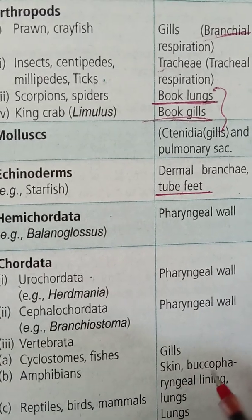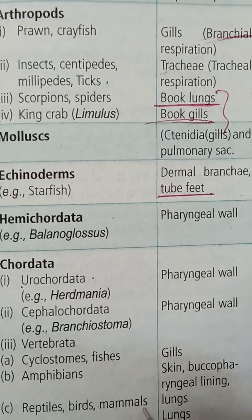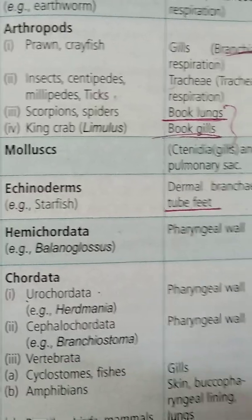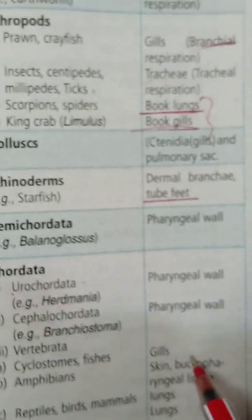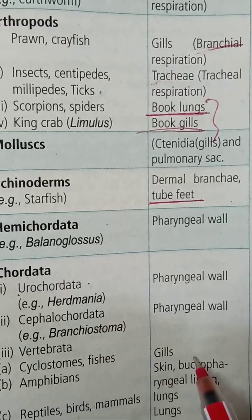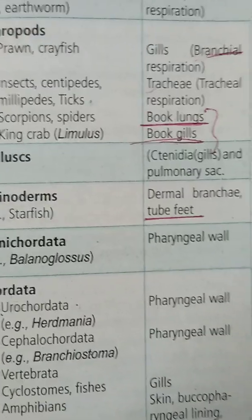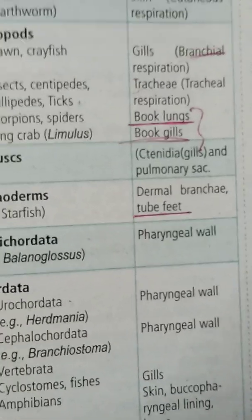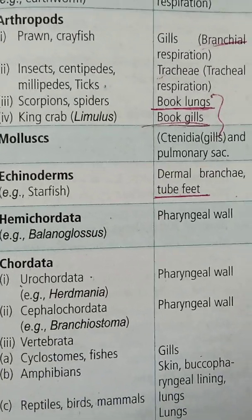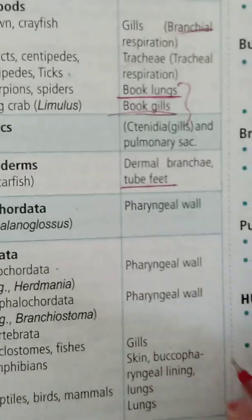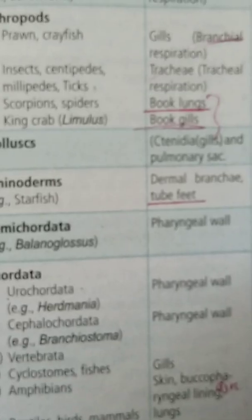In Vertebrates: Cyclostomes and Fishes — gills are involved. In Amphibians — skin and buccopharyngeal lining are involved. In Reptiles, Birds, and Mammals — lungs are involved. The buccopharyngeal respiration takes place in the thin vascular lining of the buccopharyngeal cavity in amphibians such as frogs and toads, and it mostly occurs in air.